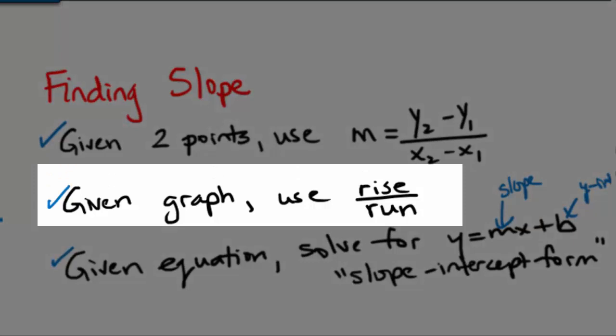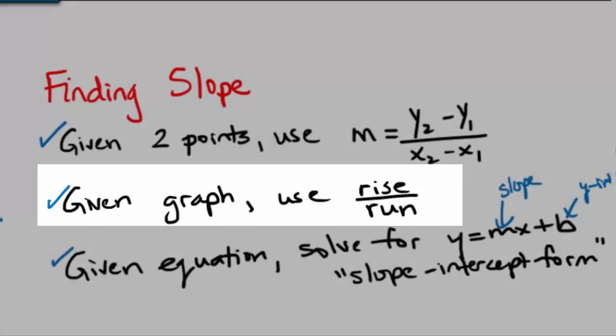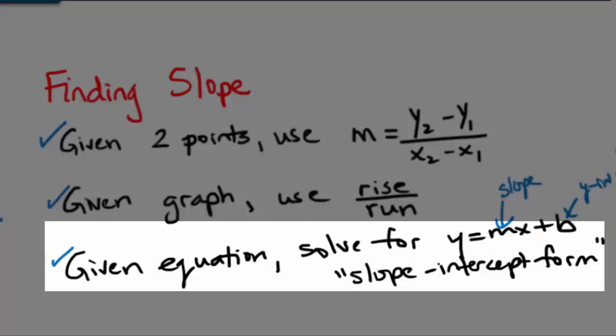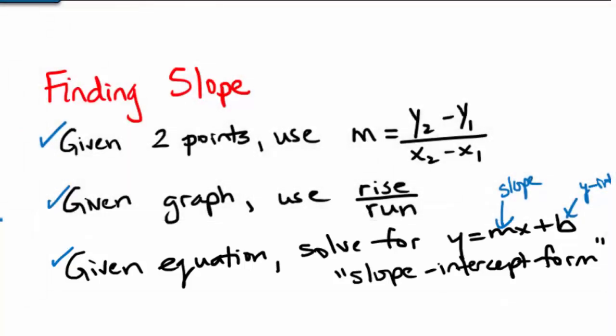If we're given a graph, we can use the idea of rise over run. The third method for finding slope is when we're given the equation of the line. Instead of using the equation in standard form, we're going to have to rearrange the line into what's called slope-intercept form, which basically just means solving for y. In other words, y has to be by itself.